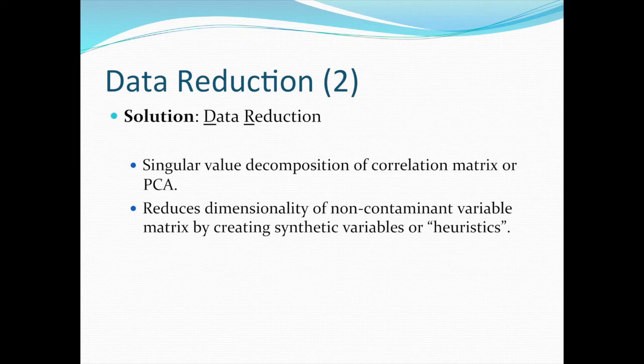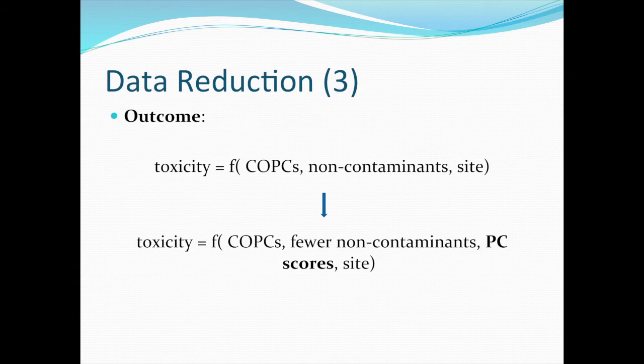Optimally, PCA will create synthetic variables that are heuristics — tools that allow you to gain insights into your data and into the mechanisms that drive toxicity. The outcome of data reduction is that you start out with a suite of analytes — the contaminants, the non-contaminants, and your site variable — and after data reduction you get rid of some of the non-contaminants by pulling out redundancies using the ordination. You can substitute in some of the derived or synthetic variables, the principal components. So we can go from a data matrix with 15 columns to one with four by using the data reduction approach.